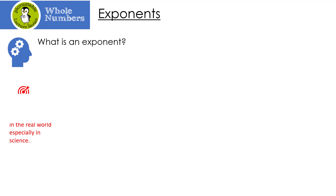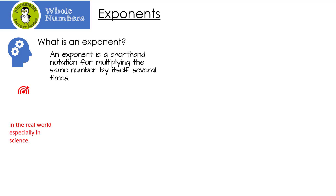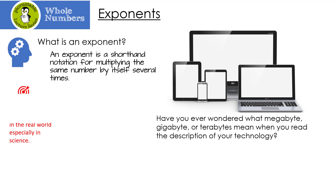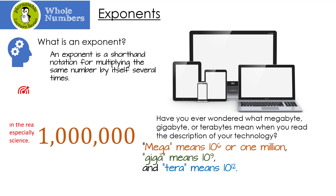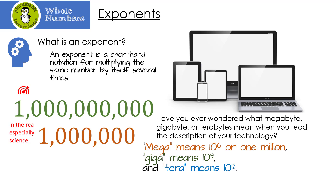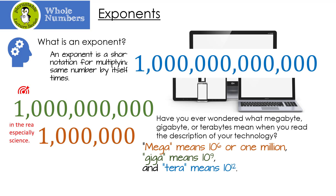Let's start out by answering the question: what is an exponent? An exponent is a shorthand notation for multiplying the same number by itself several times. Have you ever wondered what megabyte, gigabyte, or terabyte means when you read the description of your technology? Mega means ten to the sixth, or one million. Giga means ten to the ninth. And tera means ten to the twelfth. Hopefully you can see that exponents make our lives really easy.